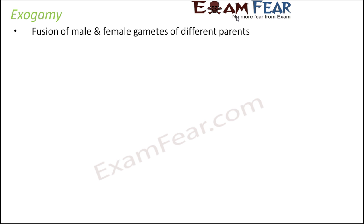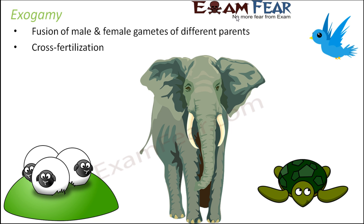Moving on to exogamy: it is the fusion of male and female gametes of different parents. 'Exo' means external, so the other gamete comes from outside — two parents are involved. This is called cross-fertilization. Examples include amphibians, reptiles, birds, and mammals — all of these show exogamy.